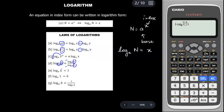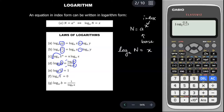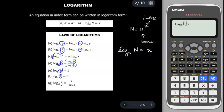For law (e): log base a of a — when the base and the number are the same — equals 1. For example, log₂2 = 1 and log₁₀10 = 1. For law (f): log base a of 1 equals 0, regardless of the base. For law (g): log base a of b equals 1 over log base b of a — the base and argument interchange. It's very important to memorize all the laws of logarithms before you attempt the questions.